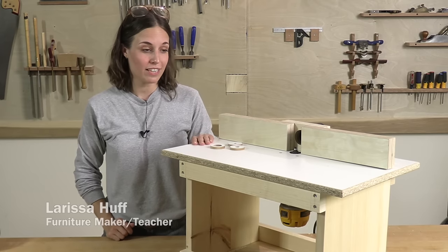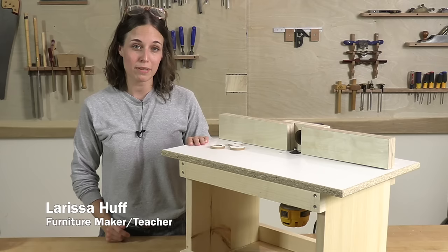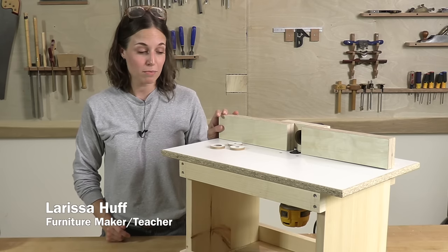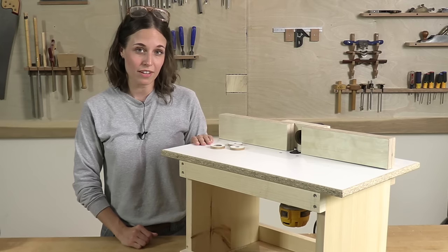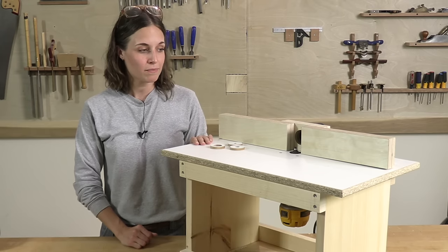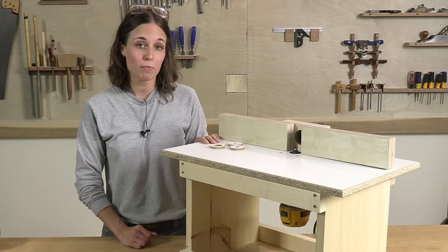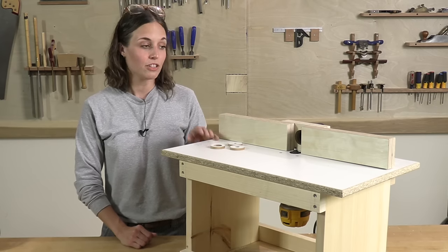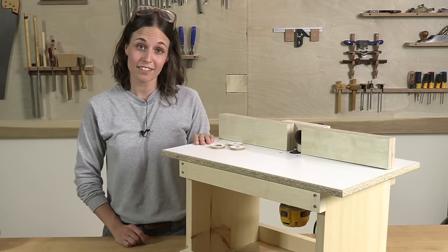Today we're going to build this router table. All you need is one board from your local box store, a little bit of melamine, and some scrap plywood to make it possible. It holds a small trim router. I've got a DeWalt here but you can make it fit whatever router you have access to. It's great for edge profiles, grooves, plows, any small projects you've got going on. It's great for beginners and you can store it pretty much anywhere in your shop. Let's get started.